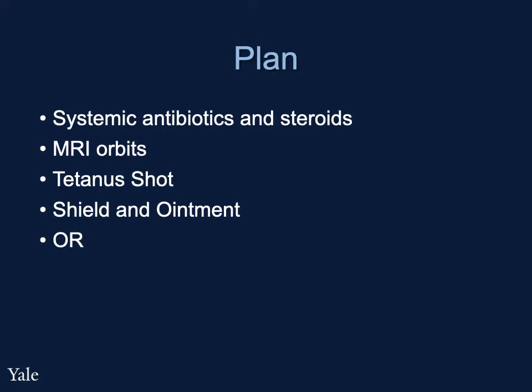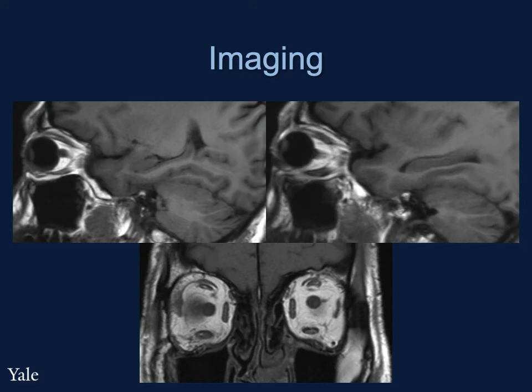We requested MRI orbits to help better visualize the soft tissue of the orbit prior to surgery. Irregularity, thickening, and edema of the right inferior rectus muscle, particularly near the globe insertion, was noted. The multiple foci of gas noted on the CT scan were unable to be re-evaluated on MRI. Injury to the inferior oblique was also unable to be excluded on imaging.